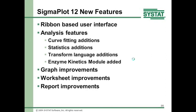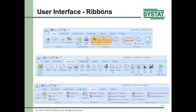Here are the ribbons. Under the Home ribbon you have things like graph export. Under the Create Graph ribbon are all the graph types you normally create. Under the Analysis ribbon there's curve fitting, various analyses like linear regression, and on the left-hand side is SigmaStat — which was added several versions ago and now has all statistics features as part of SignalPlot.